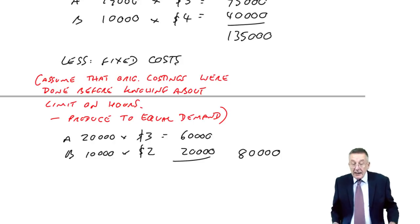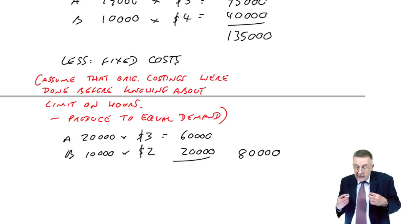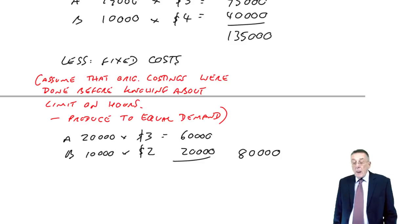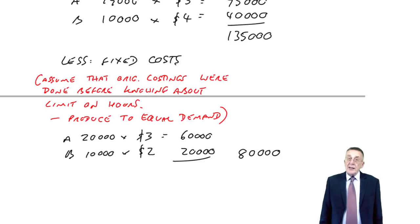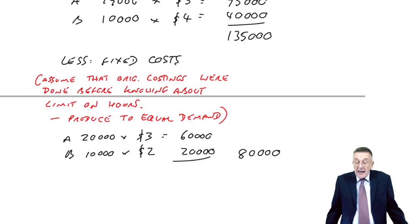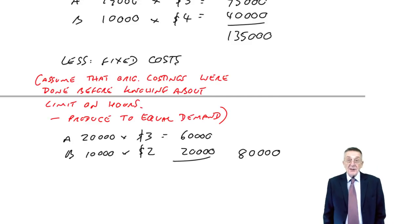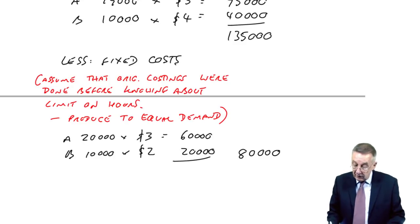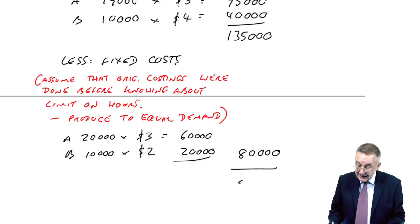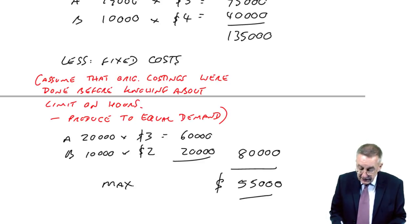So we must have expected that the total fixed costs would be $80,000. Now, clearly, we don't end up making 20 of A and 10 of B, we'll make 19 and 10. But as I said earlier, if the fixed costs were estimated to be $80,000 in total, they'll stay at $80,000. Fixed costs are fixed, they'll stay at $80,000 even if we do produce less. And so now I can work out the profit. The profit is $135,000 less $80,000. There is the maximum profit.